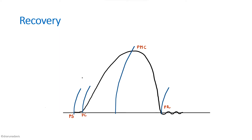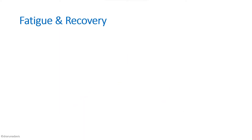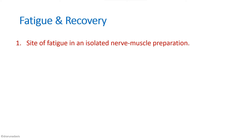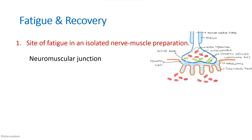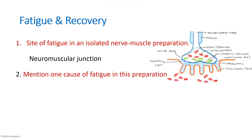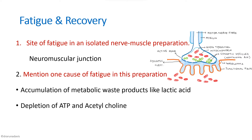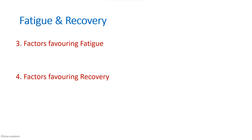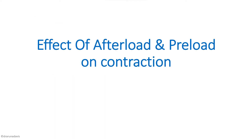The questions that can be asked for fatigue and recovery are: what is the site of fatigue in an isolated nerve muscle preparation? As stated, it is the neuromuscular junction. Remember, when the question asks to prove the seat of fatigue in an isolated nerve muscle preparation, the graph to draw is that of fatigue and recovery. One cause of fatigue is accumulation of waste products like lactic acid, as well as depletion of ATP and acetylcholine. Other questions that can be asked are about factors favoring fatigue and factors favoring recovery.